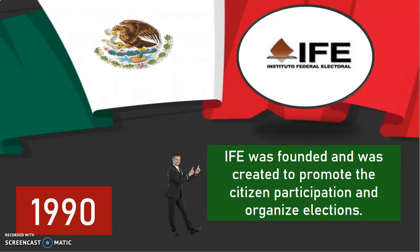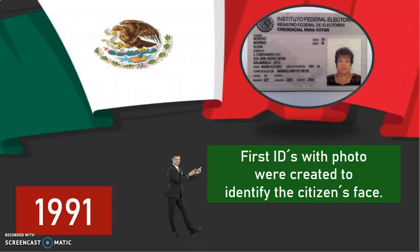In the year 1990, IFE was founded and was created to promote citizen participation and organize elections. In the year 1991, the first IDs with photos were created to identify citizens, because before, these IDs didn't have any photo.